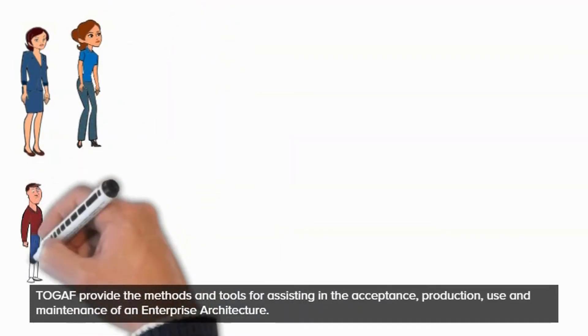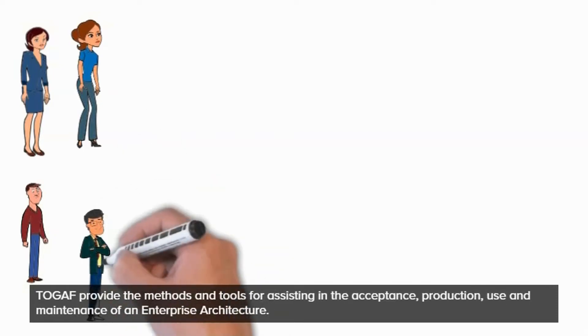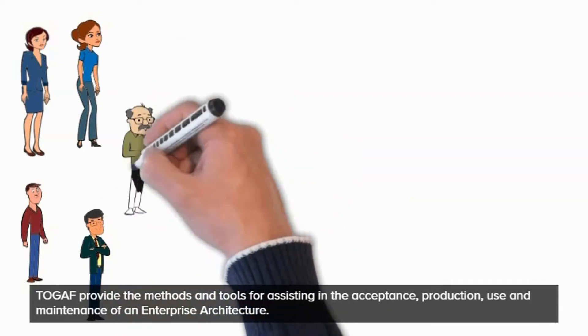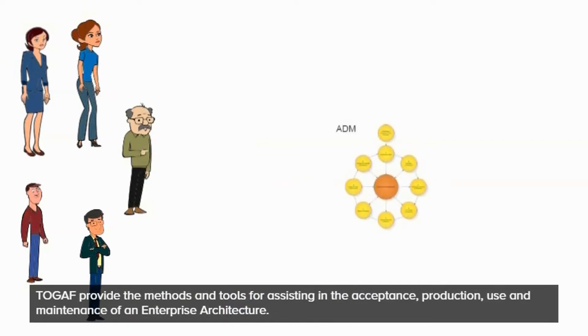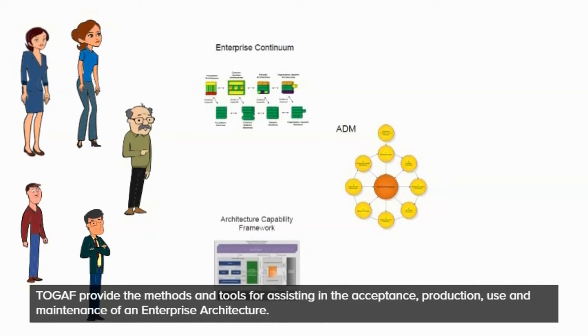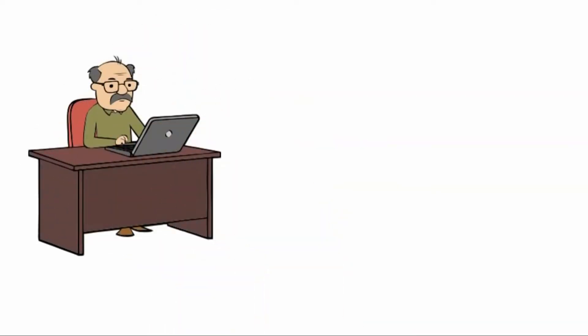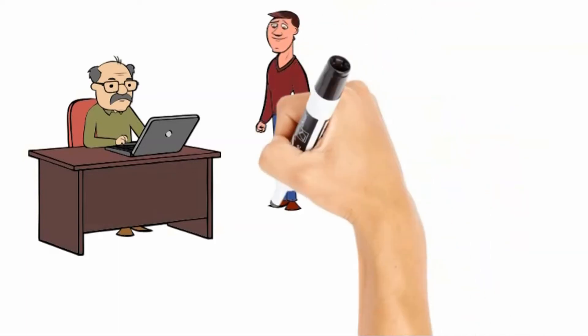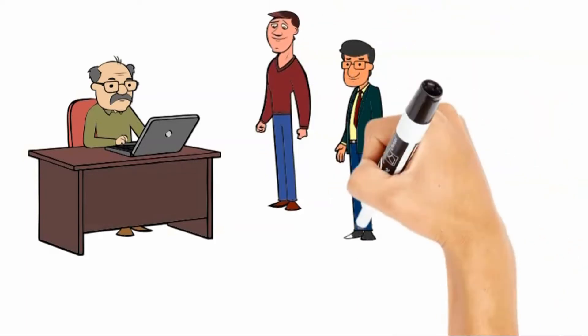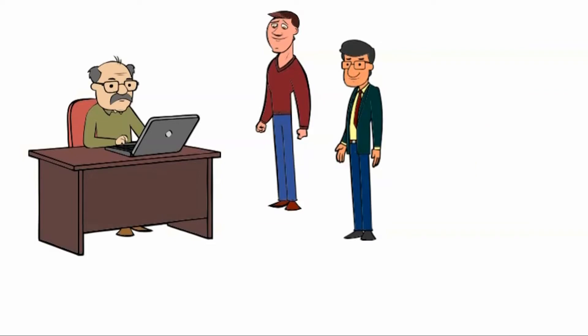TOGAF provides the methods and tools for assisting in the acceptance, production, use, and maintenance of an enterprise architecture. The five concepts defined here need to be understood and remembered while working with TOGAF. The TOGAF library is a reference library containing guidelines, templates, patterns, and other forms of reference material to accelerate the creation of new architectures for the enterprise. In this TOGAF foundation course, Philip's architect team will learn the TOGAF basics, provides validation that they have gained knowledge of the TOGAF terminology, structure, and basic concepts, and understand the core principles of enterprise architecture and the TOGAF standard.